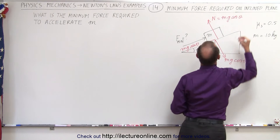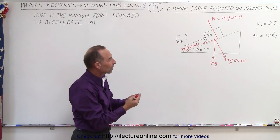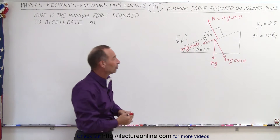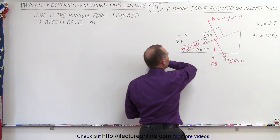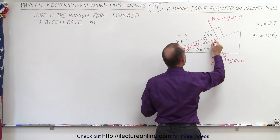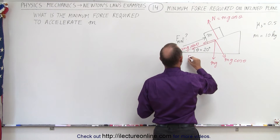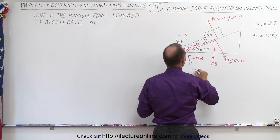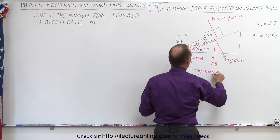And then we have a friction force. The friction force will be in the opposite direction of the motion the block would have without the friction force. Without the friction force, if the applied force is greater than mg sine theta, the block would accelerate up the incline, so therefore the friction force will push in the downward direction. The friction force is equal to the normal force times mu, which equals mg cosine theta times mu.